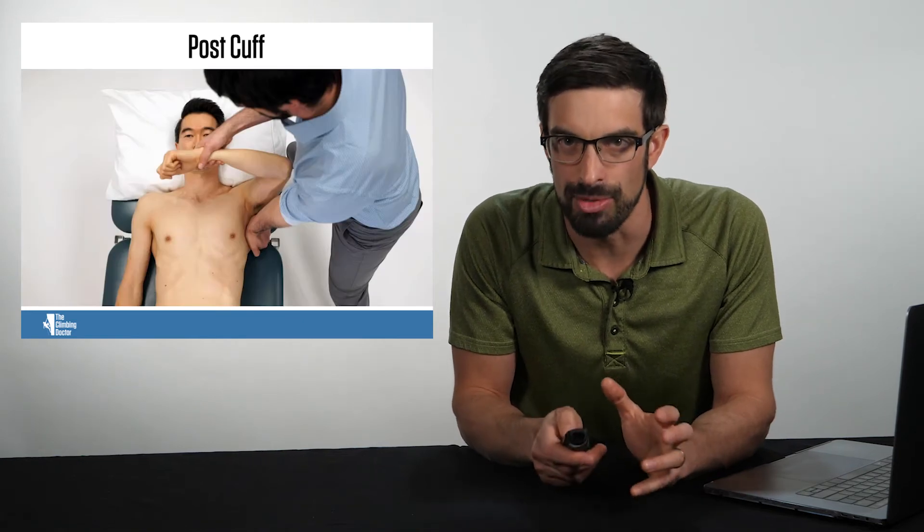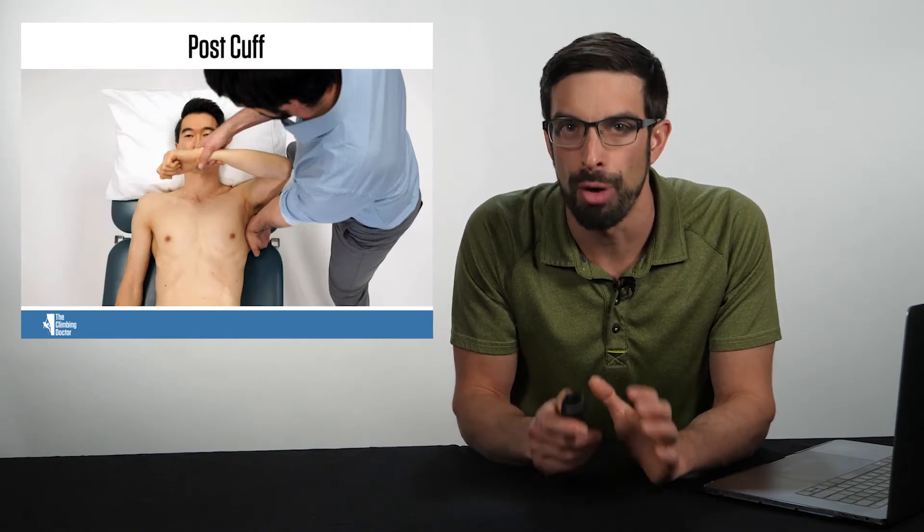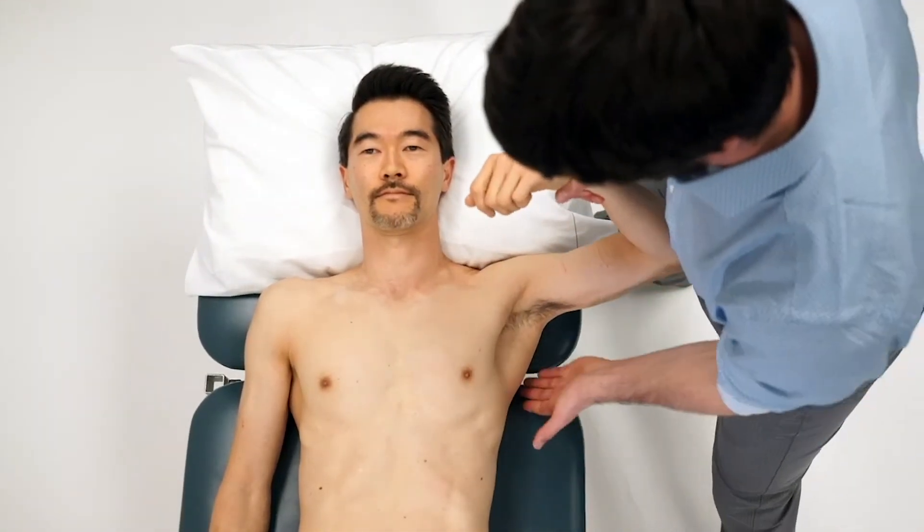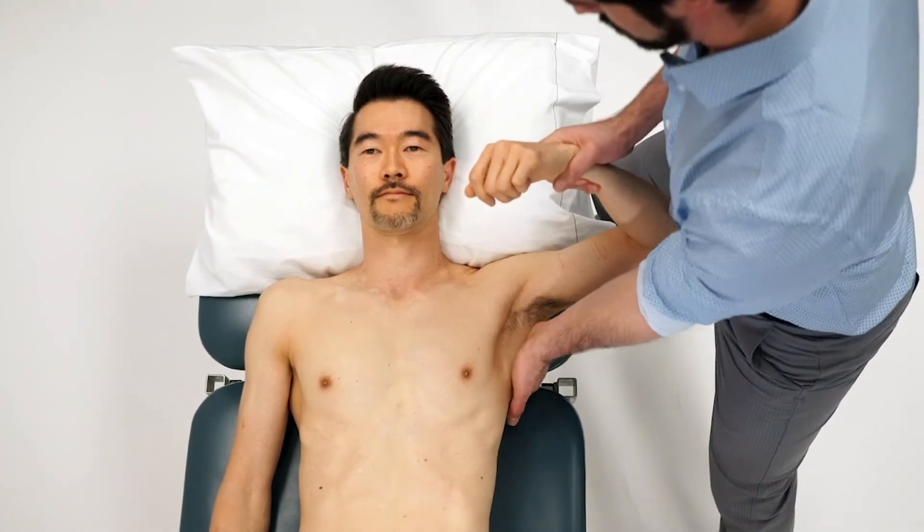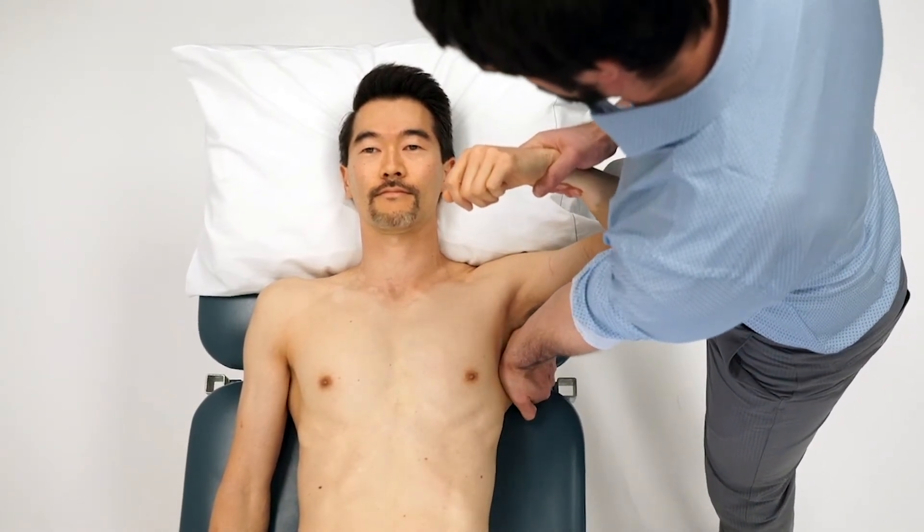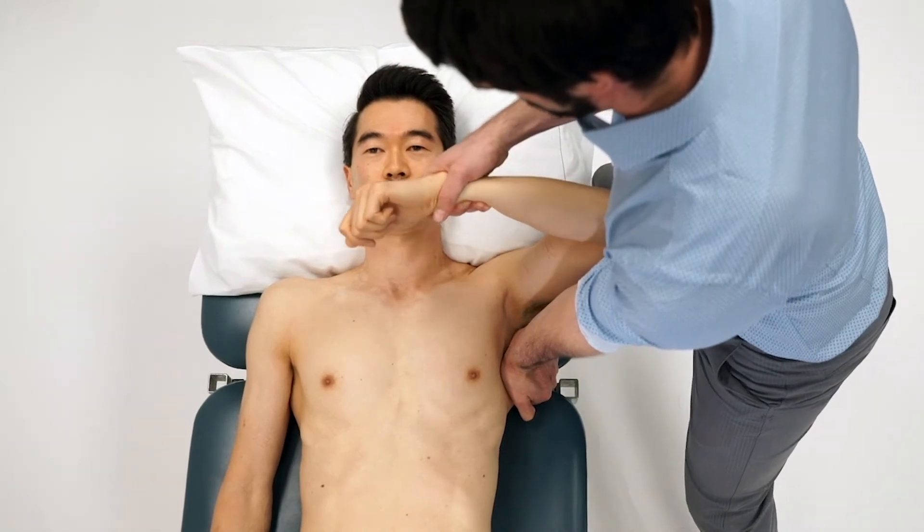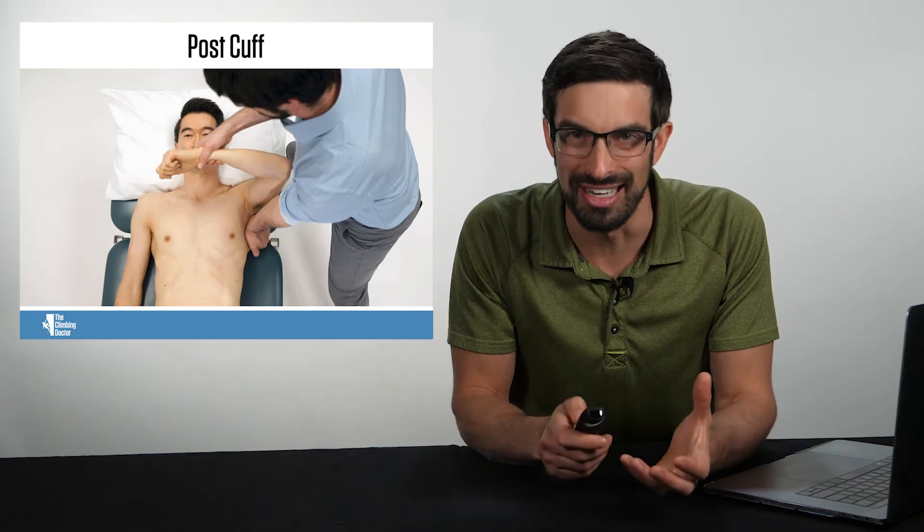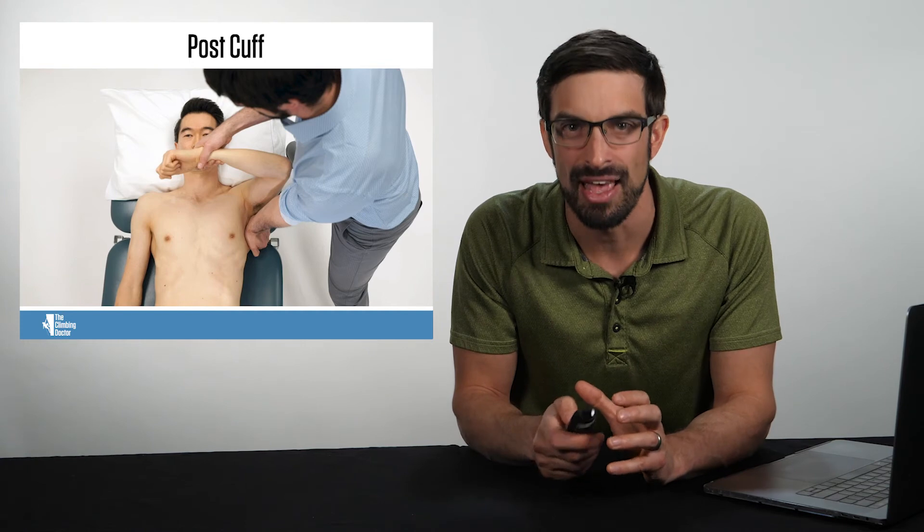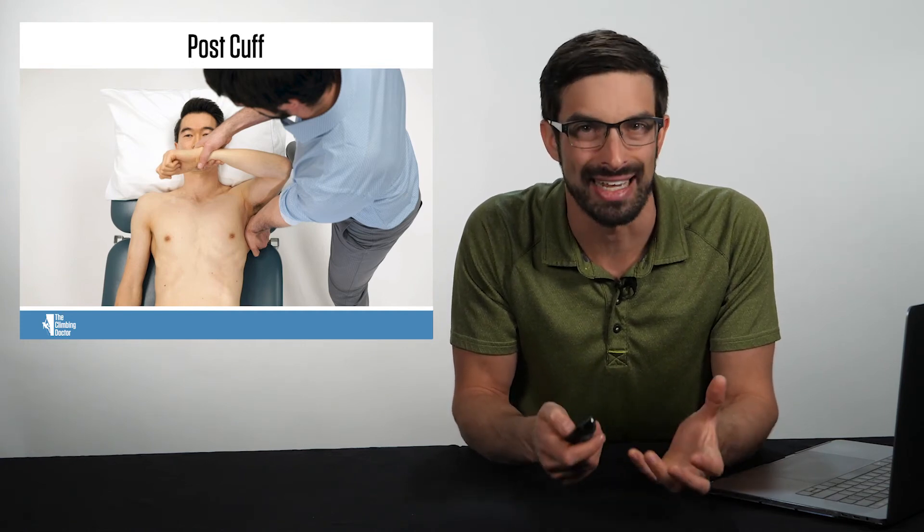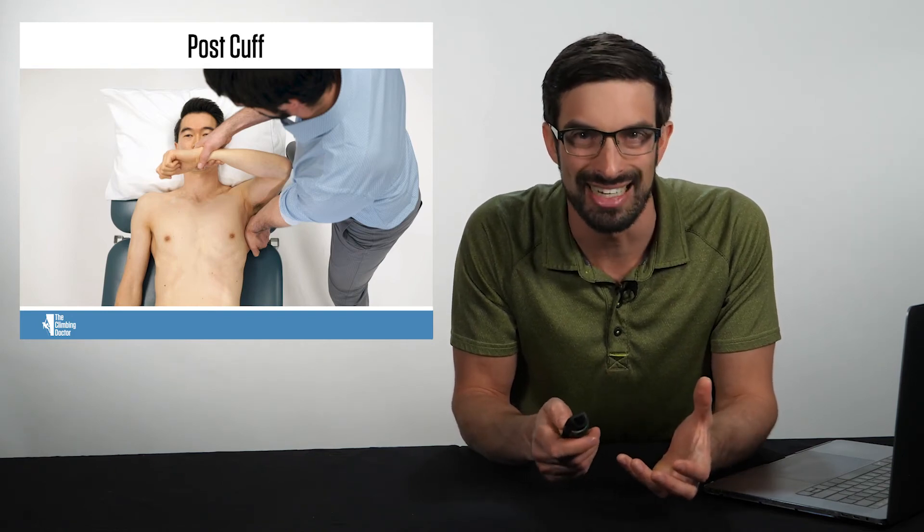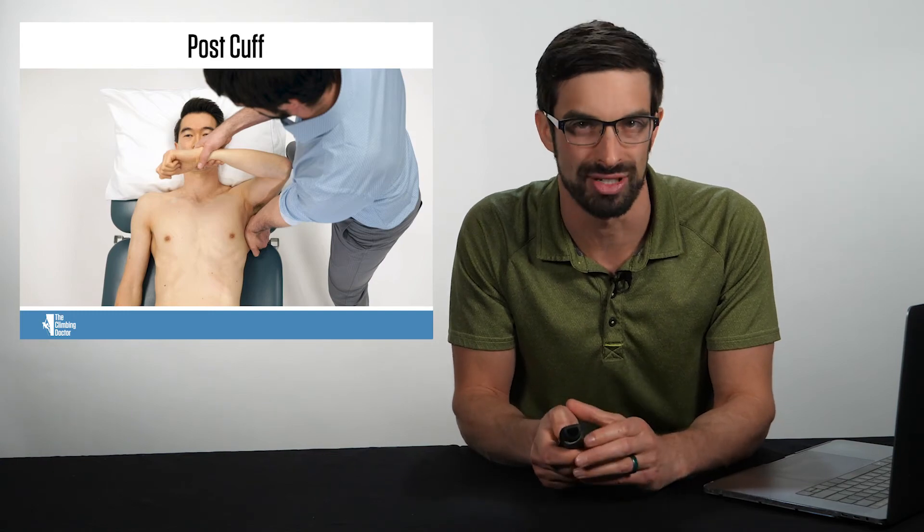A mobility deficit that climbers often present with is a short or stiff posterior cuff or posterior joint capsule. Here's a modified Tyler's test. The clinician will stabilize the lateral border of the scapula into the table, they'll grasp the climber's distal radial ulnar joint, and they'll horizontally adduct their humerus with a normative value of the elbow reaching the nose. The clinician will appreciate the end feel whether it is a firm capsular end feel from the joint capsule or a firm muscular end feel from the posterior rotator cuff. They'll need to determine which structures are creating that mobility deficit.